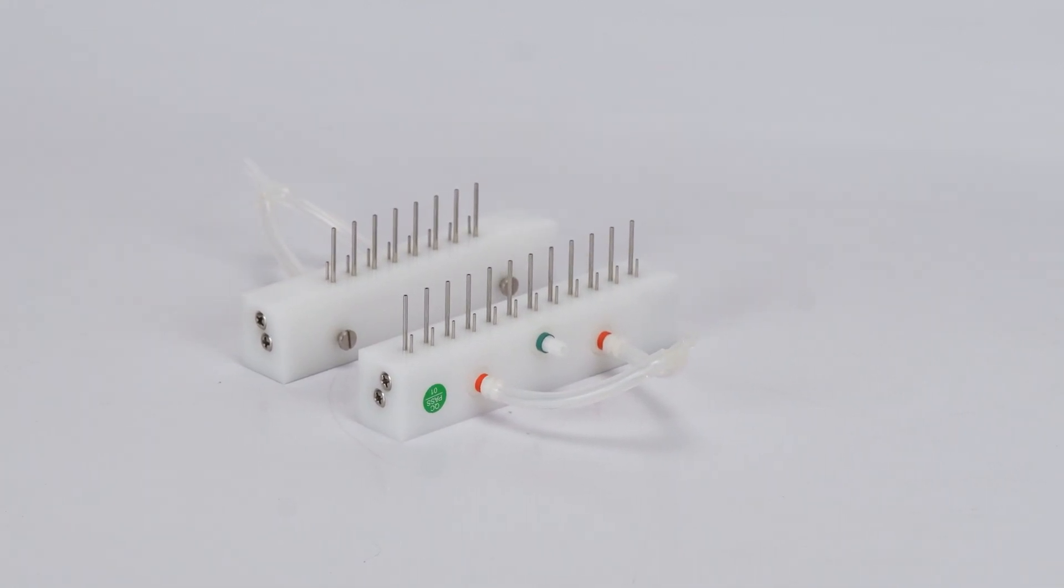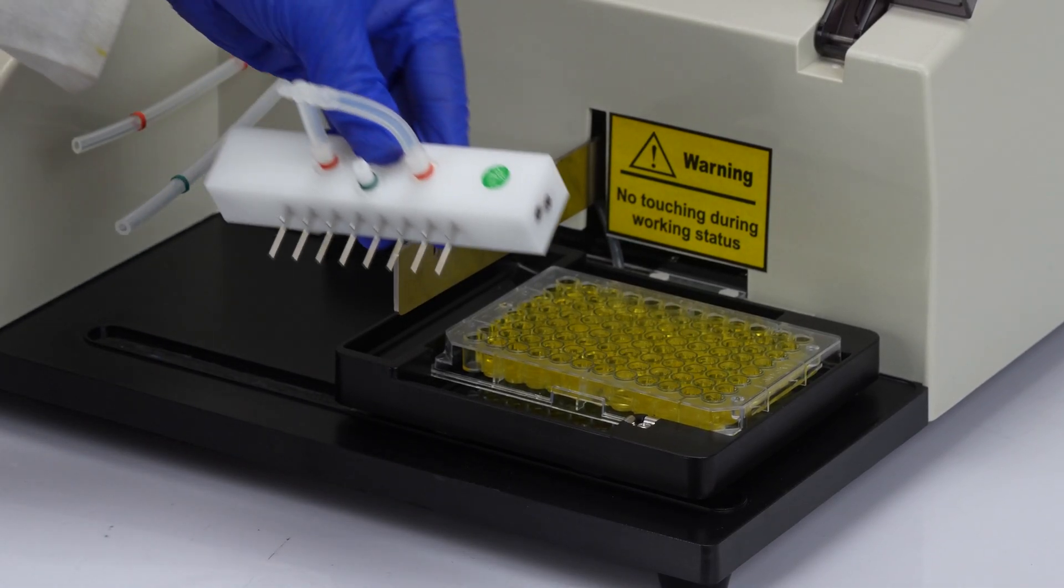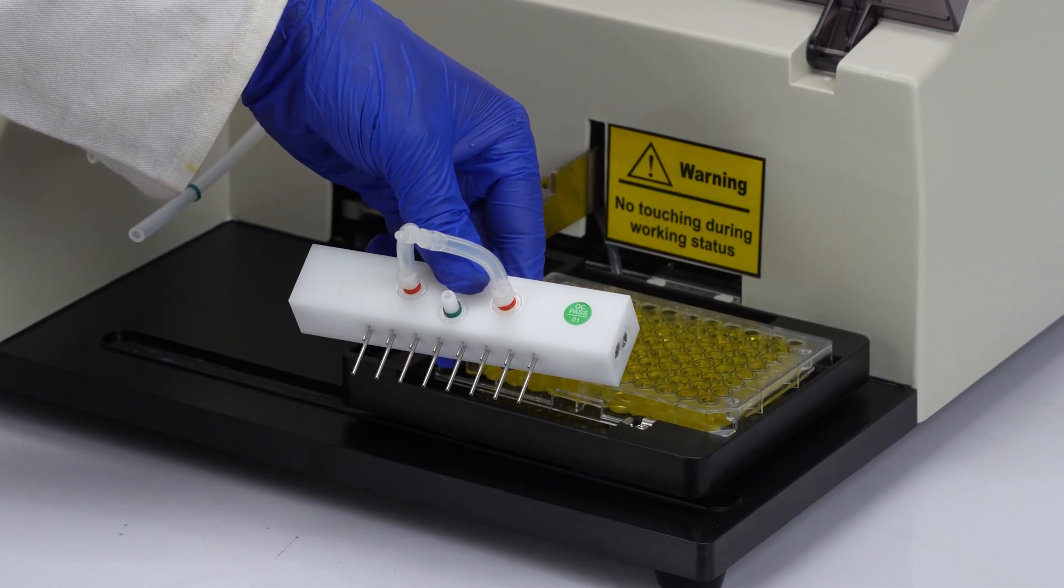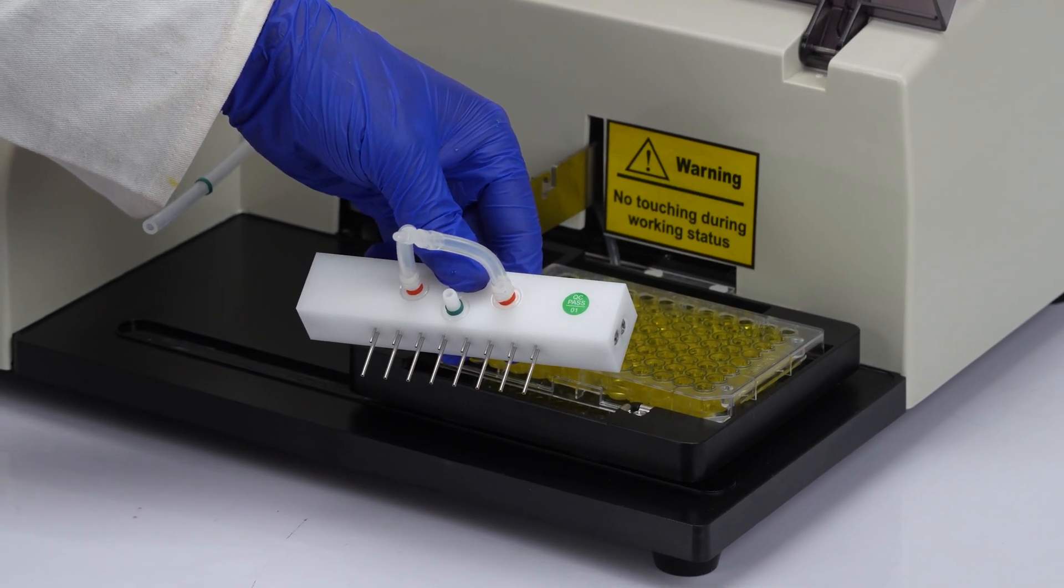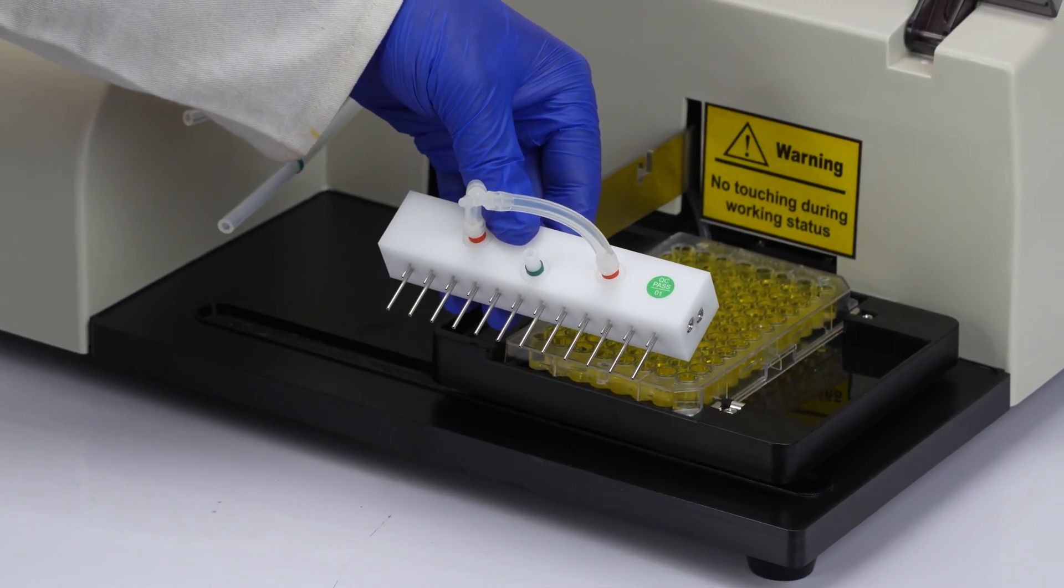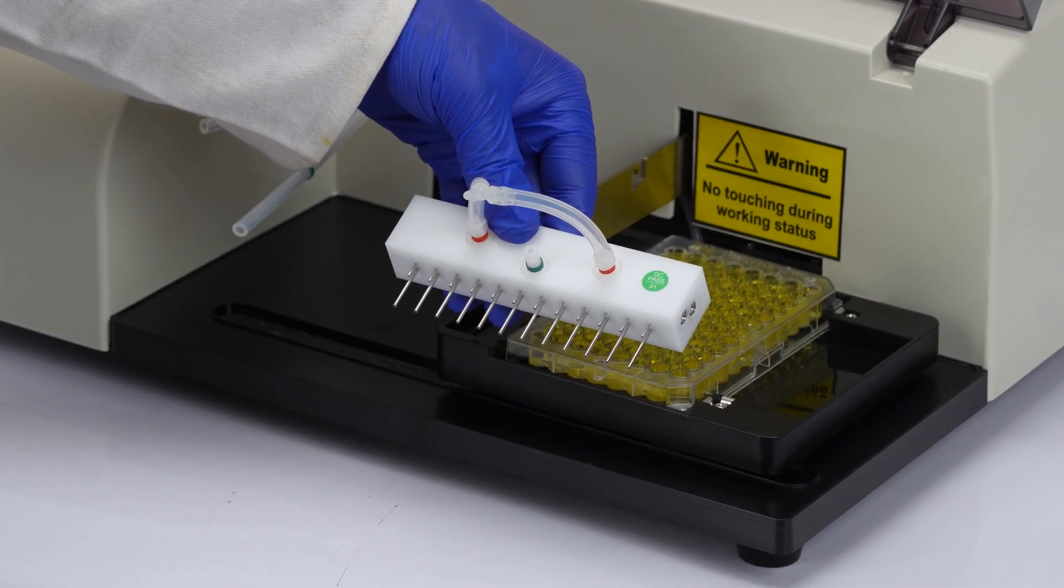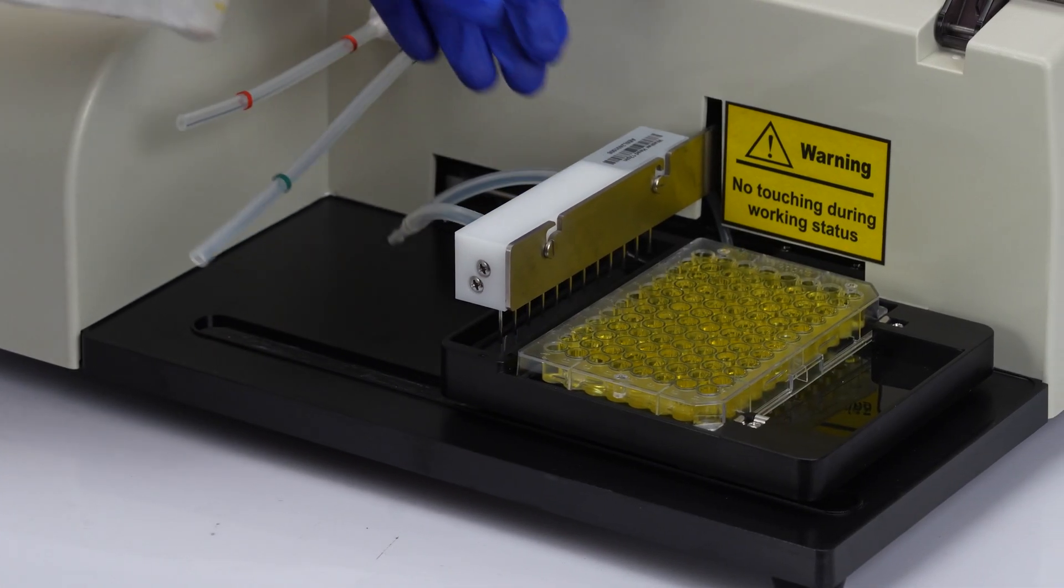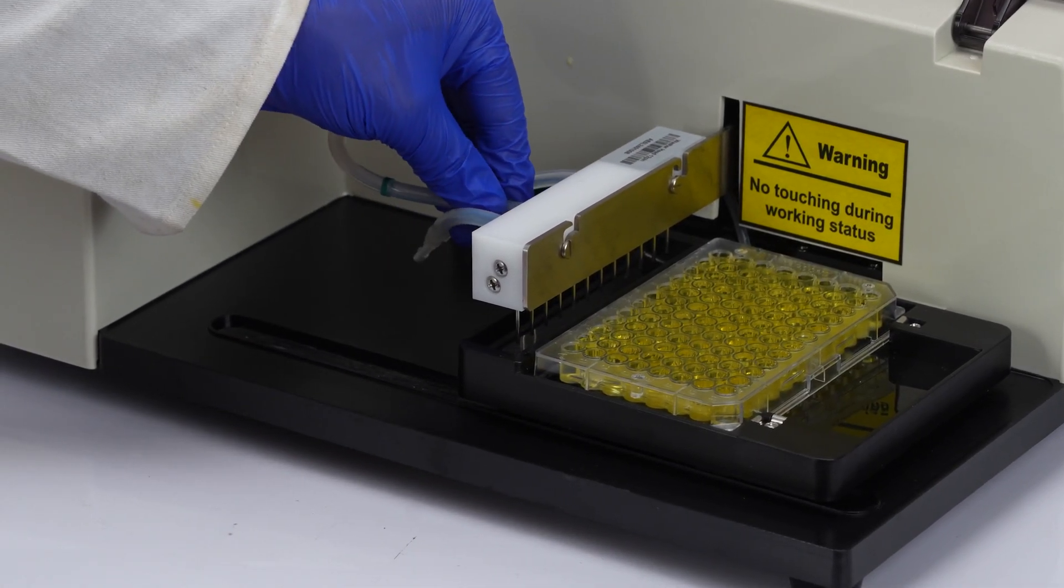Choose the 8 channel manifold if the ELISA plate is in a horizontal position or the 12 channel manifold if it's in a vertical position. Simply attach the manifold to the washer head and ensure it is firmly secured.